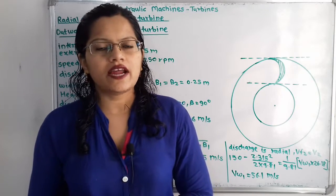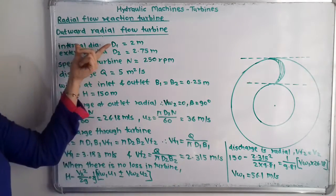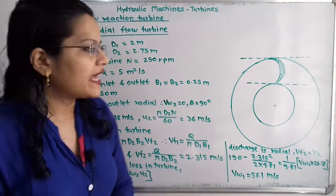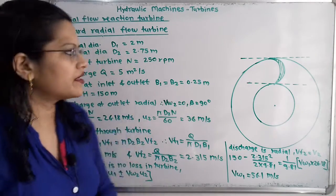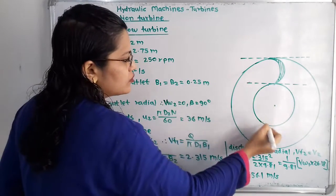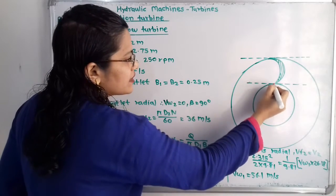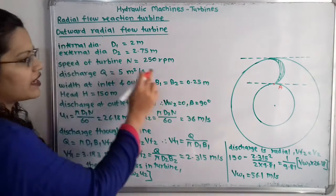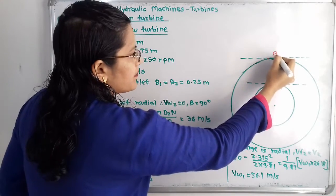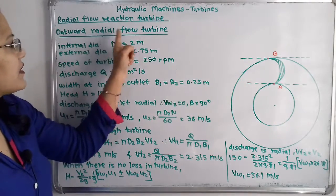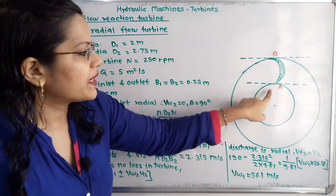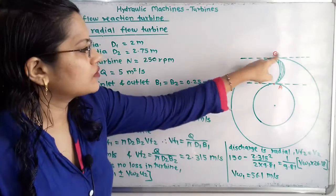Let us first understand the given data. The internal diameter D1 is 2 meter and external diameter D2 is 2.75 meter. That means at the internal diameter there is the inlet tip, which is 2 meter. So the inner 2 meter circle is the inlet tip A, and the external diameter D2 of 2.75 meter is the outlet tip B. In this way, water moves from the inside periphery to the outside circle periphery in this outward radial flow reaction turbine.